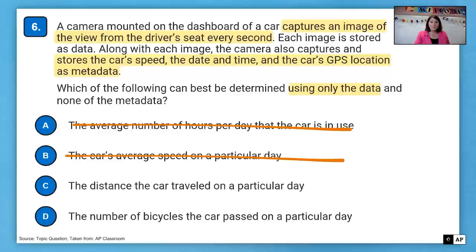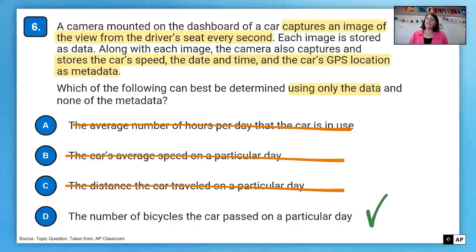The distance traveled, again, we don't know that. But we could see the number of bicycles the car passed because we have that image data so we could see those bicycles. So that's your answer there, answer D.